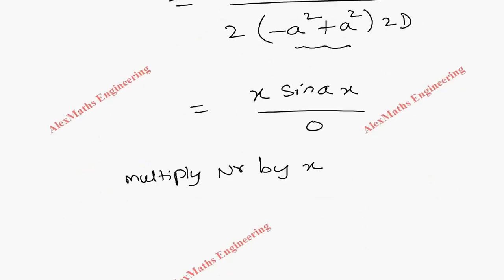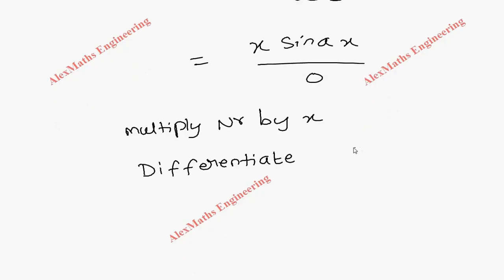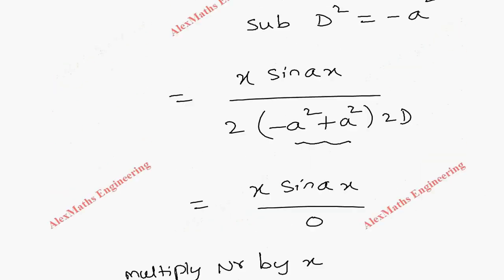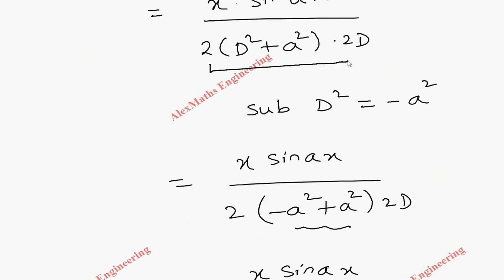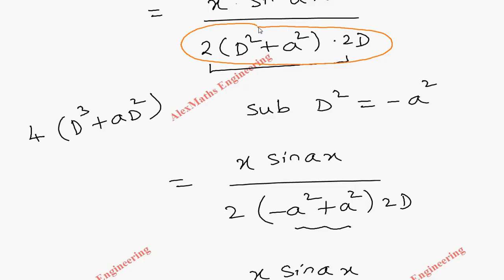So again we multiply the numerator by x — since there is already one x it becomes x² — giving x²·sin(ax) in the numerator. The denominator: 4 times d/dx of (D³ + a²·D), which we are going to differentiate.